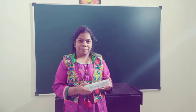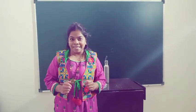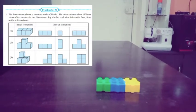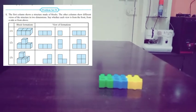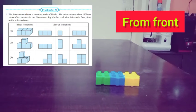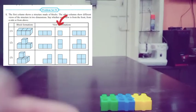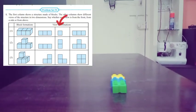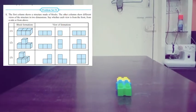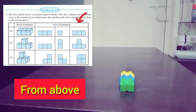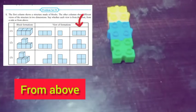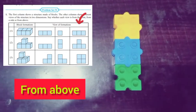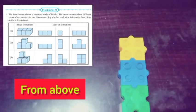Let us see problem set 51 of our textbook. The first diagram — this is how it looks from the front. Let us see it from one side — that's how it's going to look like from the side. And let us see it from above — this is how your diagram is going to look like from up.